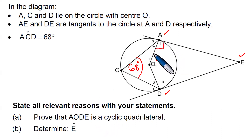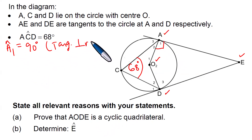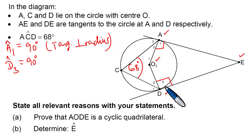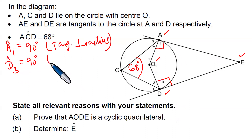First things first, we note that this angle here is equal to 90 degrees. So we note that angle A1 is equal to 90 degrees. Why? Because of tangent perpendicular to radius. Moreover, we have D3 equals 90 degrees as well. Because AE is a tangent — it's perpendicular to radius OA. But also DE is a tangent, so it's perpendicular to radius OD. Tangent perpendicular to radius.